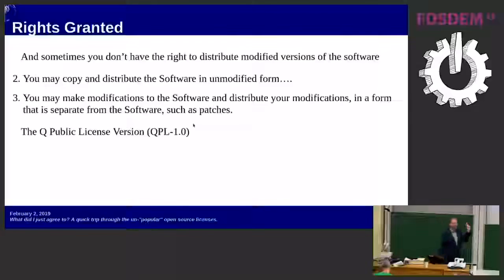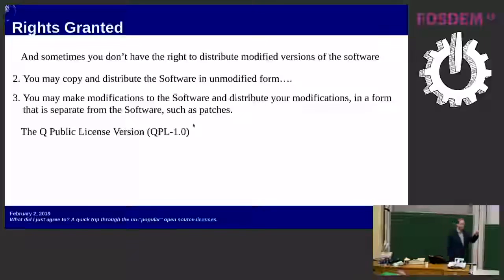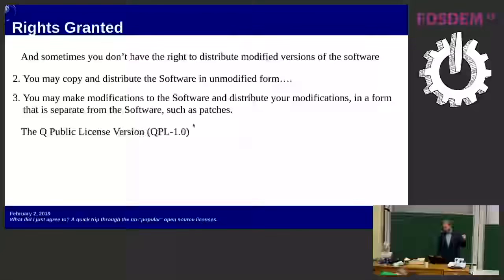There are also licenses — remember, these are only licenses approved by OSI — similar to this one. The QPL from Trolltech, used by QT for a long time, says you can copy and distribute the software in unmodified form — that's a right. You can make modifications and distribute your modifications, but only as patches. So you can't distribute your modified software directly; you've got to distribute the unmodified software and then patches alongside it. It fulfills the expectation that you can modify it, but is very specific about how you can distribute those modifications.